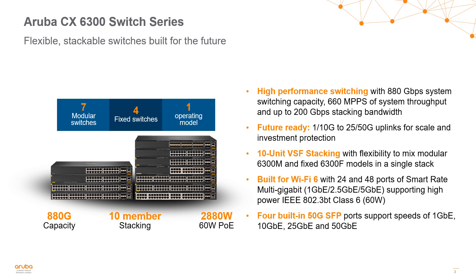Taking a closer look at the Aruba CX 6300 switch series, these are a series of switches designed to be flexible, providing customers with the interfaces and requirements they need for each scenario. We have seven modular switches and four fixed switches — 11 total. Some are PoE switches, some are not. They feature high performance switching that can scale up to 880 gigabits per system, up to 660 million packets per second of system throughput, and upwards of 200 gigabits of stacking bandwidth.